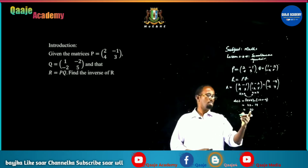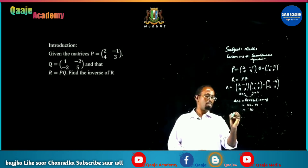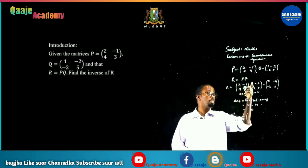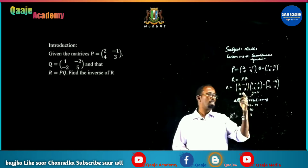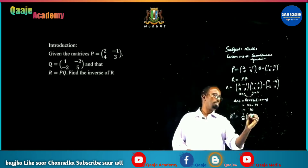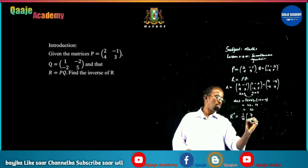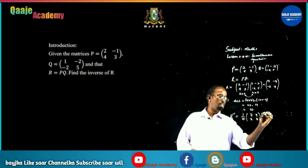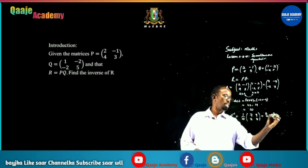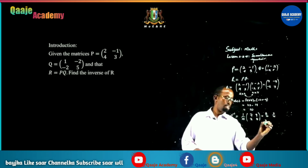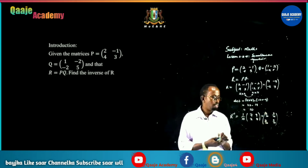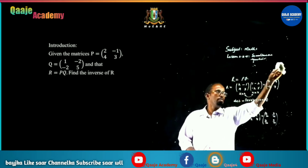The inverse of R equals the reciprocal of the determinant times the adjusted matrix. We interchange elements in the main diagonal — that gives 7 — then reverse the sign of elements in the secondary diagonal: plus 2 and plus 9. Then 4 remains. Multiplying by 1/10, we get 7/10, 9/10, 2/10, and 4/10. You can still simplify these. That is the introduction from our previous lesson.